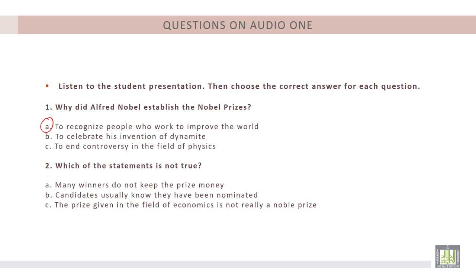Question number two: Which of the statements is not true? A. Many winners do not keep the prize money. B. Candidates usually know they have been nominated. C. The prize given in the field of economics is not really a Nobel Prize. All of these statements are true except for B. Candidates usually know they have been nominated — in fact, candidates do not know they have been nominated.